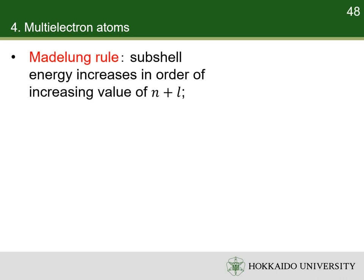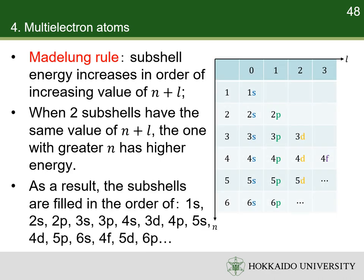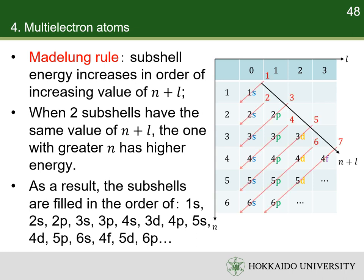The order of subshell energies is given by Madelung's rule. First, the energy of subshells increases in order of increasing value of n + l. Second, for subshells with the same value of n + l, the energy of subshells increases in order of increasing value of n. As a result of the Aufbau principle and Madelung's rule, the order of electron filling can be simply depicted. The orbitals crossed by the same red arrow have the same n + l value, and the direction of the red arrow indicates the order of orbital filling.